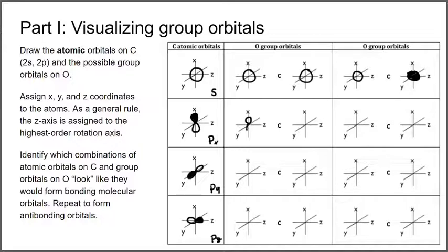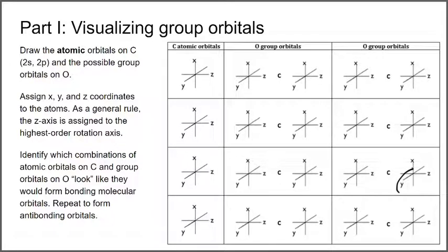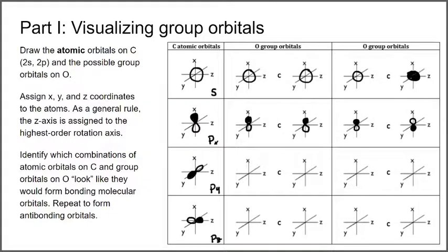We can do the same exercise for the px orbitals on oxygen: either the combination where they're pointed the same direction, or the combination where they're pointed in opposite directions with the lobes flipped. The same applies to the py orbitals — both the same-direction and opposite-direction combinations — and finally the same for the pz orbitals.